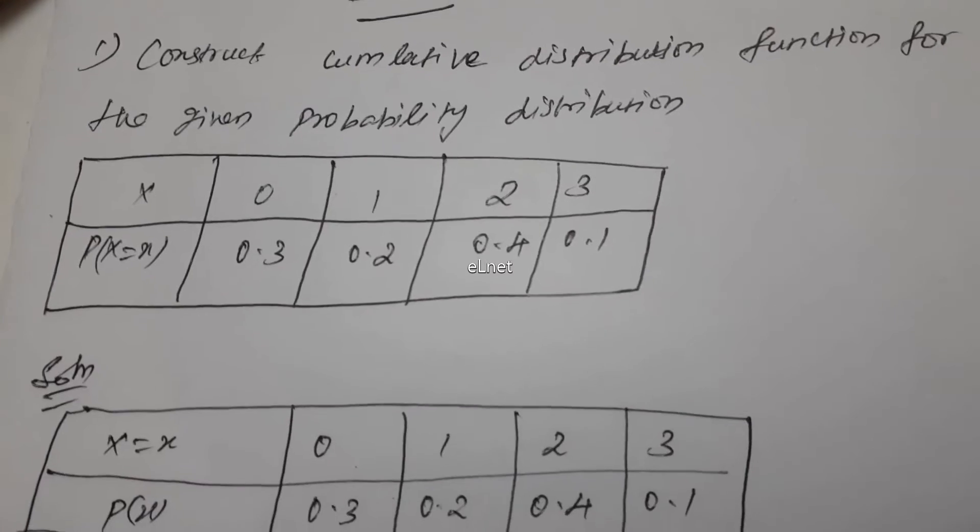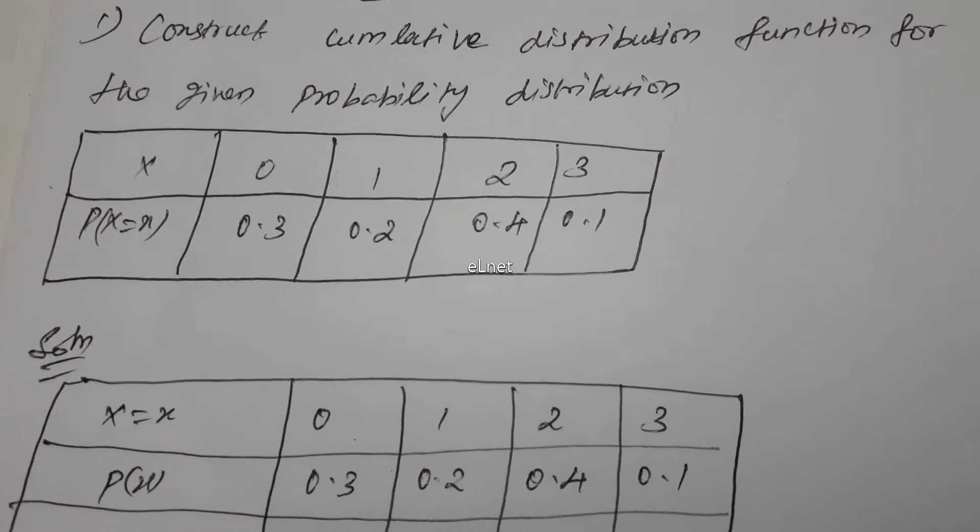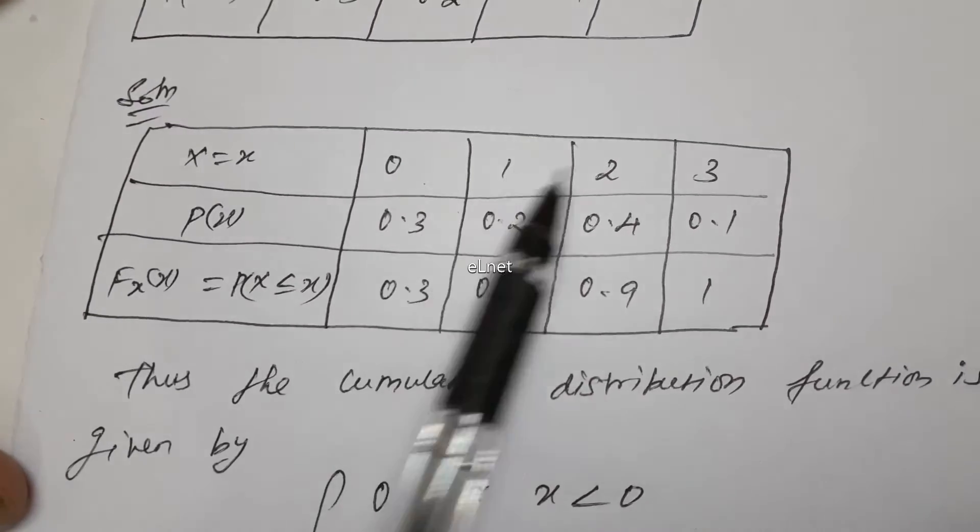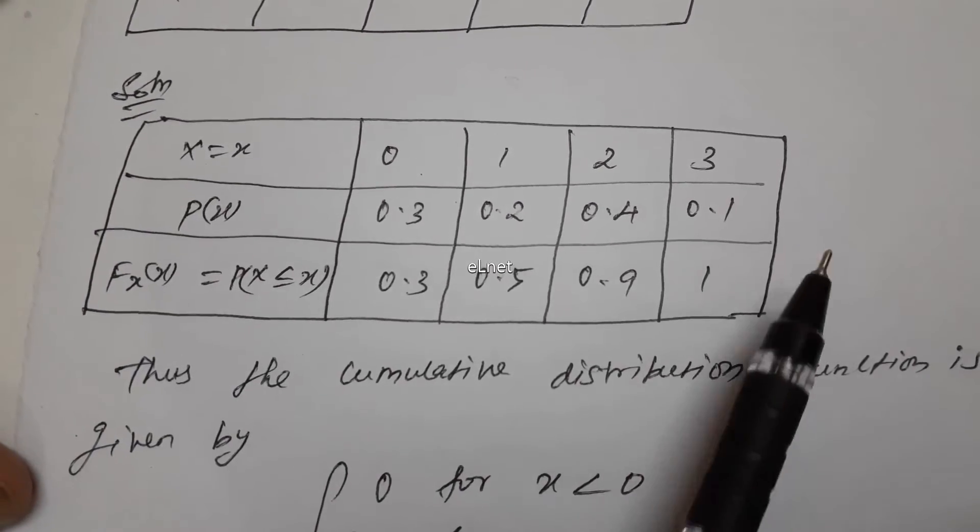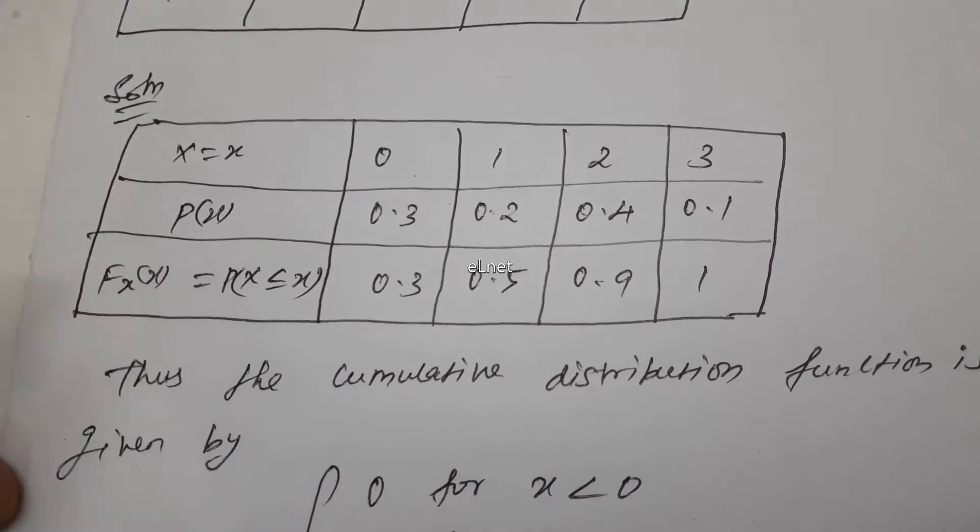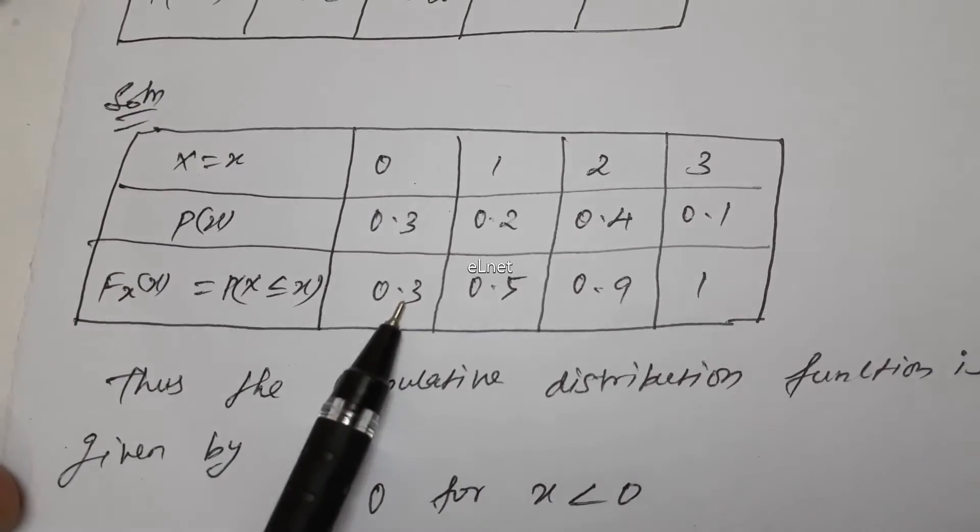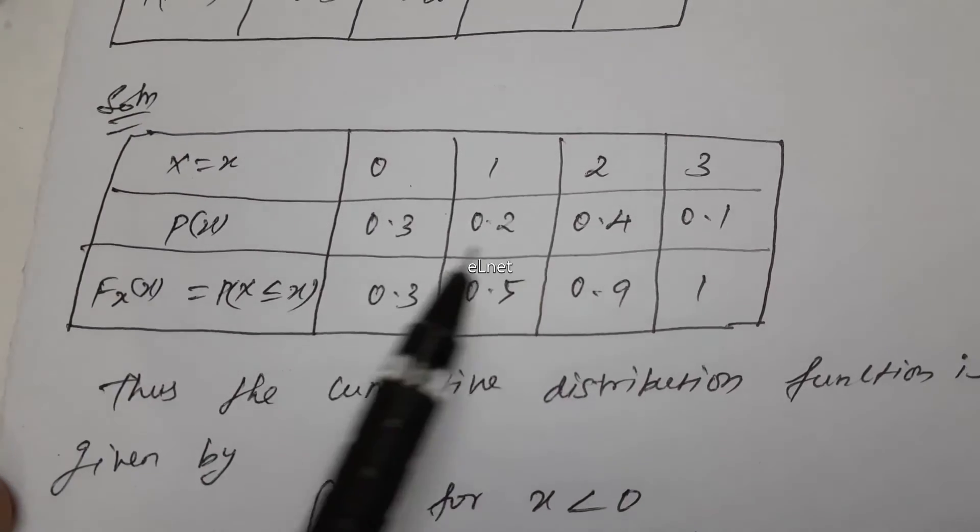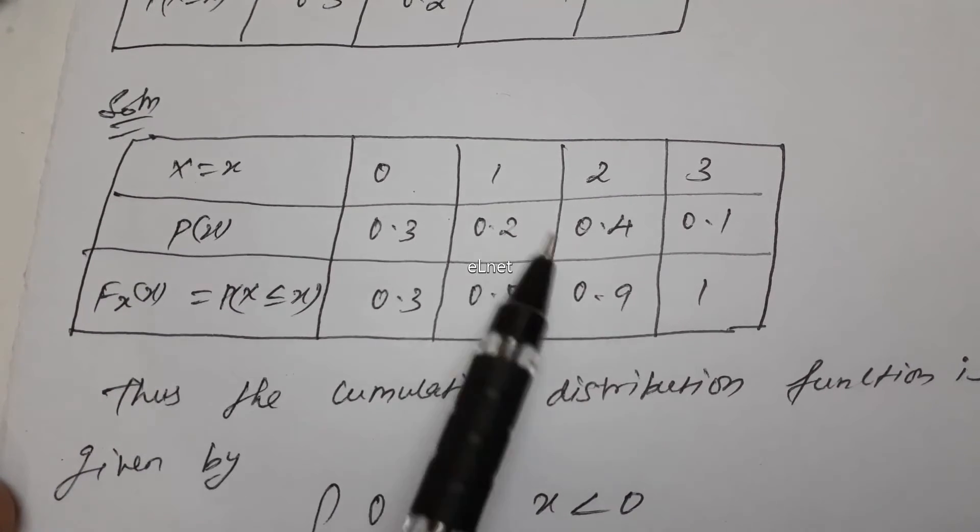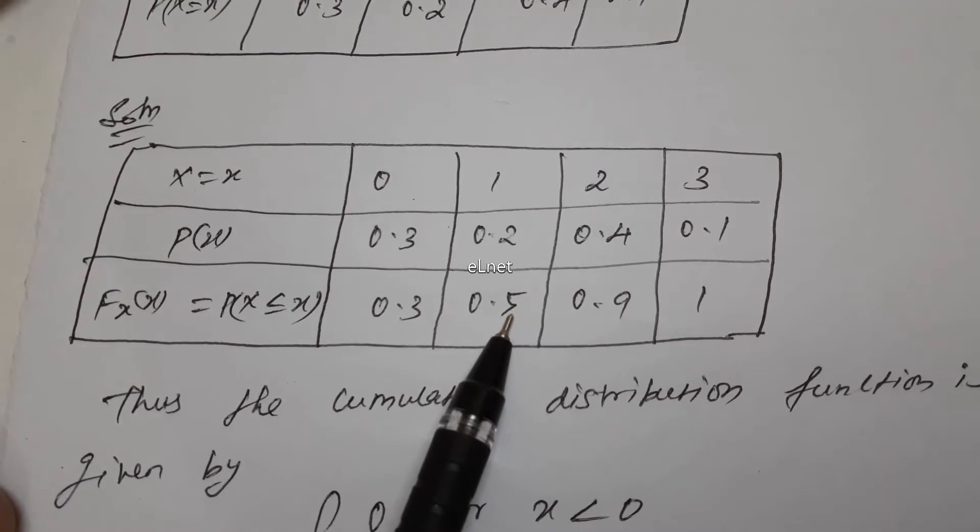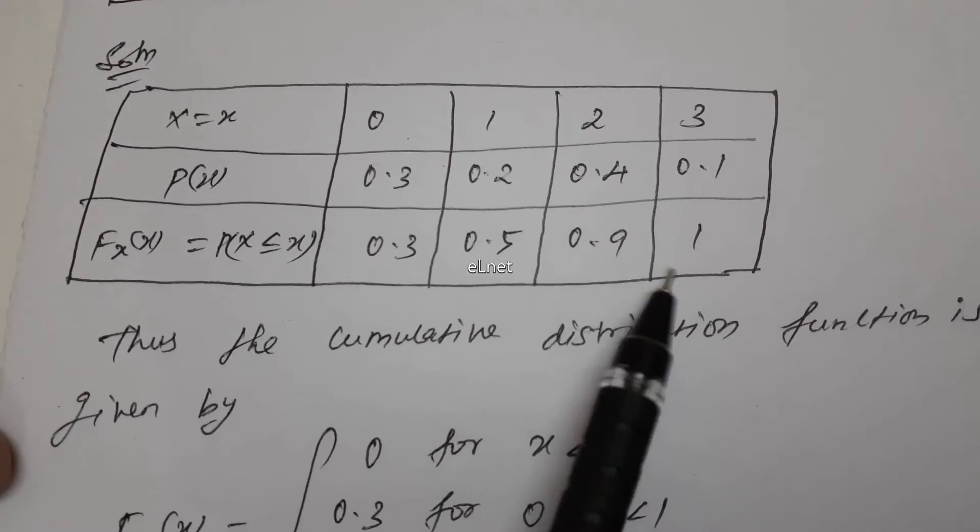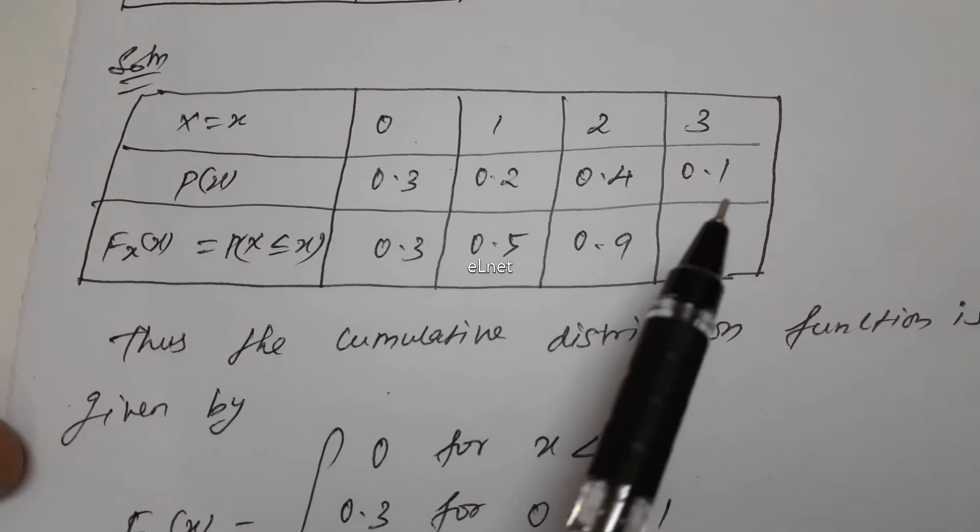Now we construct the cumulative distribution function F(x). At x equals 0, F(x) equals 0.3. At x equals 1, add 0.5. At x equals 2, we get 0.9. Then 0.9 plus 0.1 gives 1.